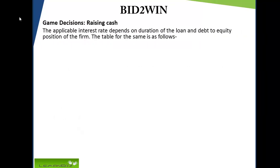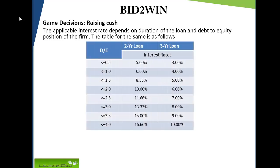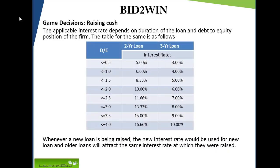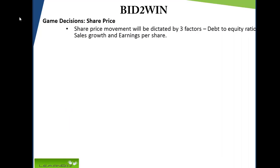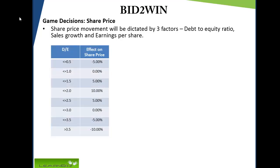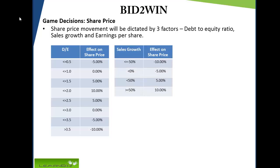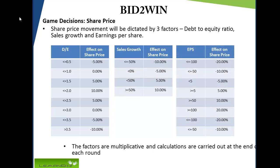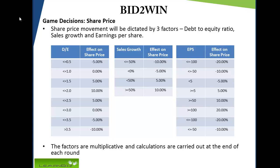The applicable interest rate depends on the duration of the loan and the debt to equity position of the firm, as shown in the table. Whenever a new loan is being raised, the new interest rate would be used for the new loan, and older loans will attract the same interest rate at which they were raised. Share price movement will be dictated by three factors: debt to equity ratio, sales growth, and earnings per share. The below table indicates the effects on share price of each of these factors; the factors are multiplicative and calculations are carried out at the end of each round.